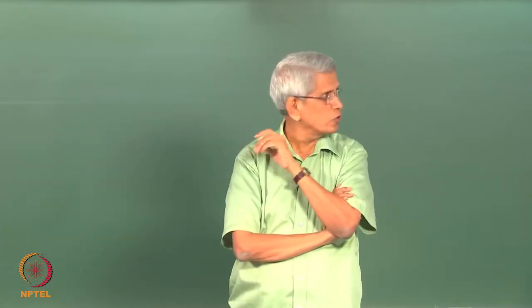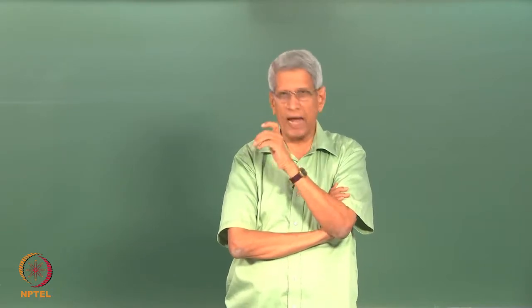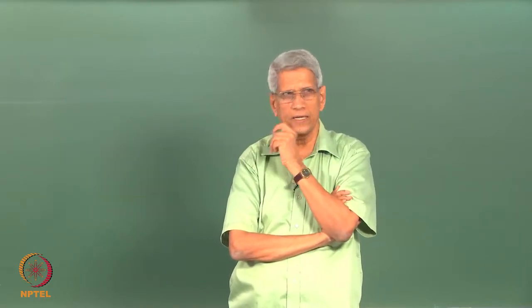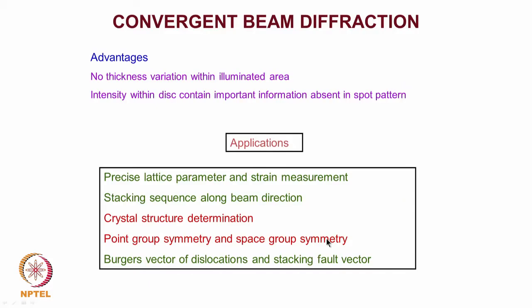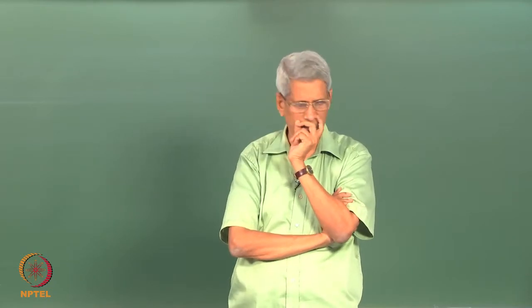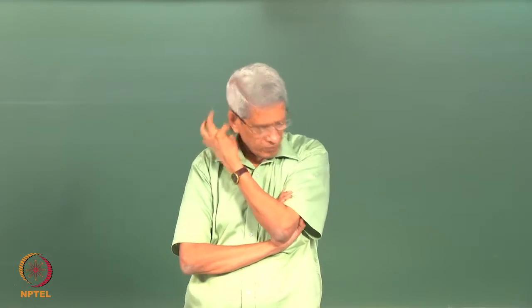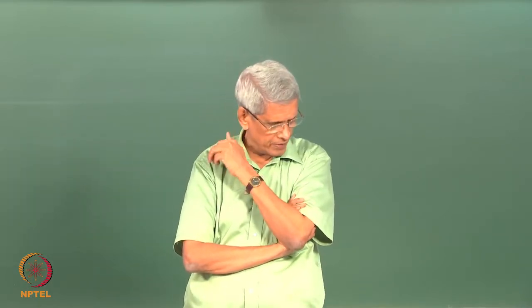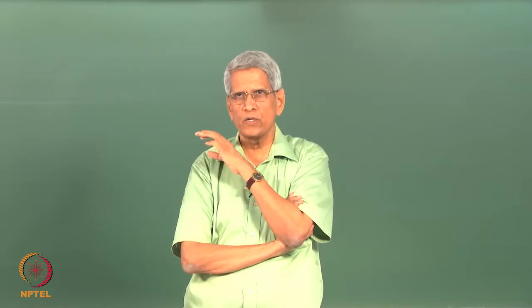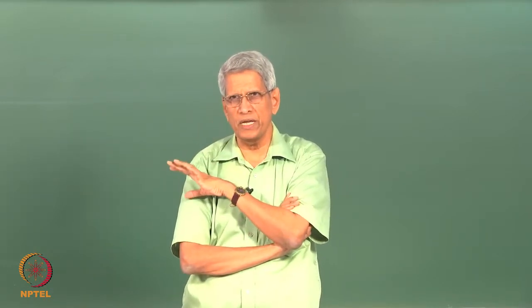Convergent beam diffraction can be used to find out lattice parameters accurately. If we can measure the lattice parameter accurately, the variation in lattice parameter is what strain is all about, so we can find out strain distribution in the sample. We can also get the unit cell lattice parameter, determine the point group and space group symmetry of the crystal, and find out characteristics of various defects.